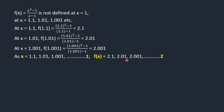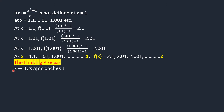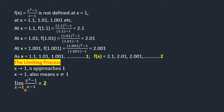The process of f(x) approaching 2 as x approaches 1 is known as the limiting process. It is denoted as x → 1 and read as x approaches 1. In the language of limits, it is written as: limit of x squared minus 1 over x minus 1 as x approaches 1 equals 2. Here, 2 is called the limiting value.